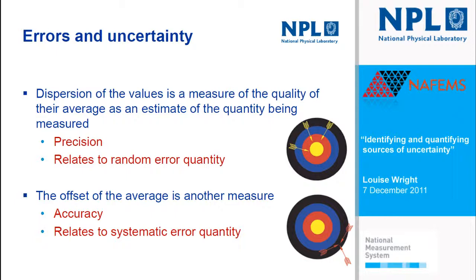We tend to separate uncertainties into two different types. The first is random uncertainties, typified by the scatter shown in the arrows at the top, and that's basically quantified by a standard deviation. The second type is more to do with accuracy issues — values close together but offset from the centre. Normally you'd remove all accuracy issues, but in some cases you're not able to describe them sufficiently well to remove them, so you have to take them into account as an uncertainty rather than an error.